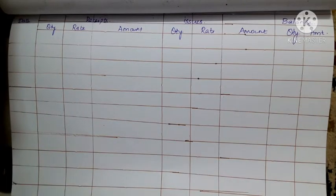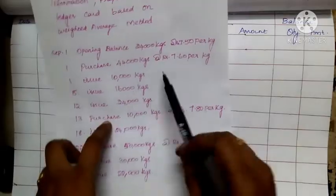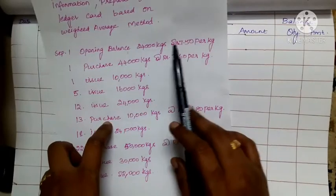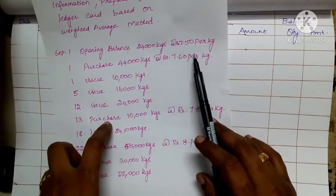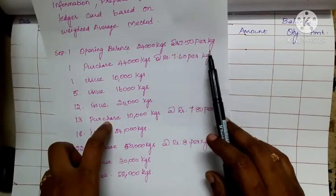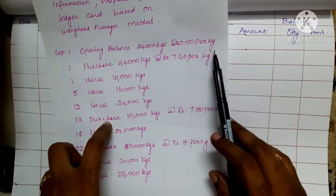Now let's look at what we have in the problem. First, you have to take the opening balance: 24,000 kg at 7.50 per kg.